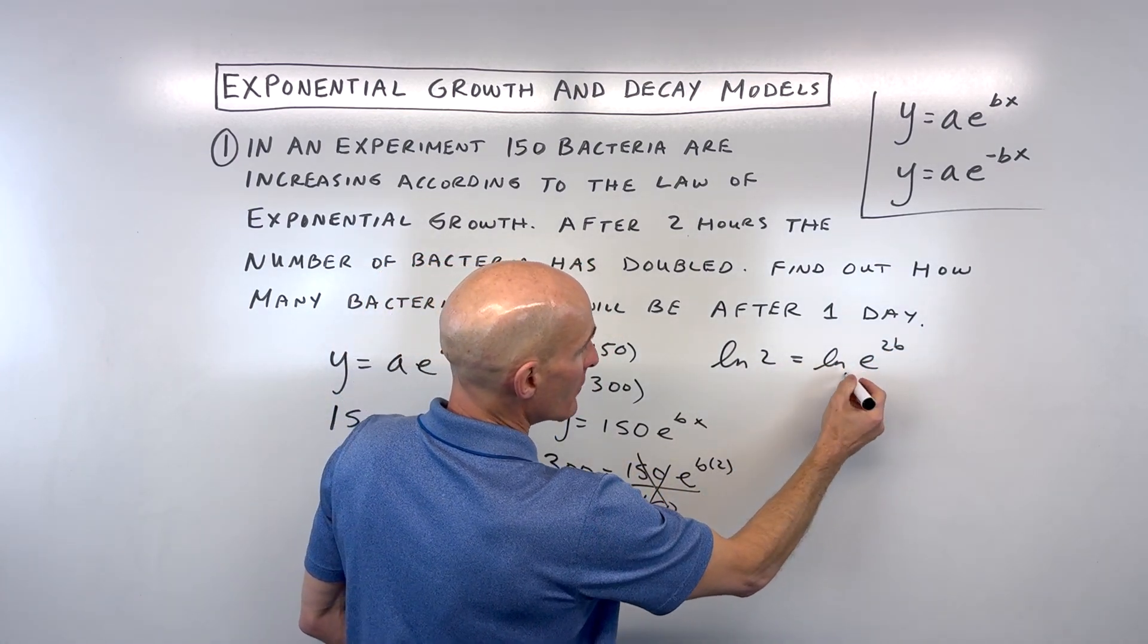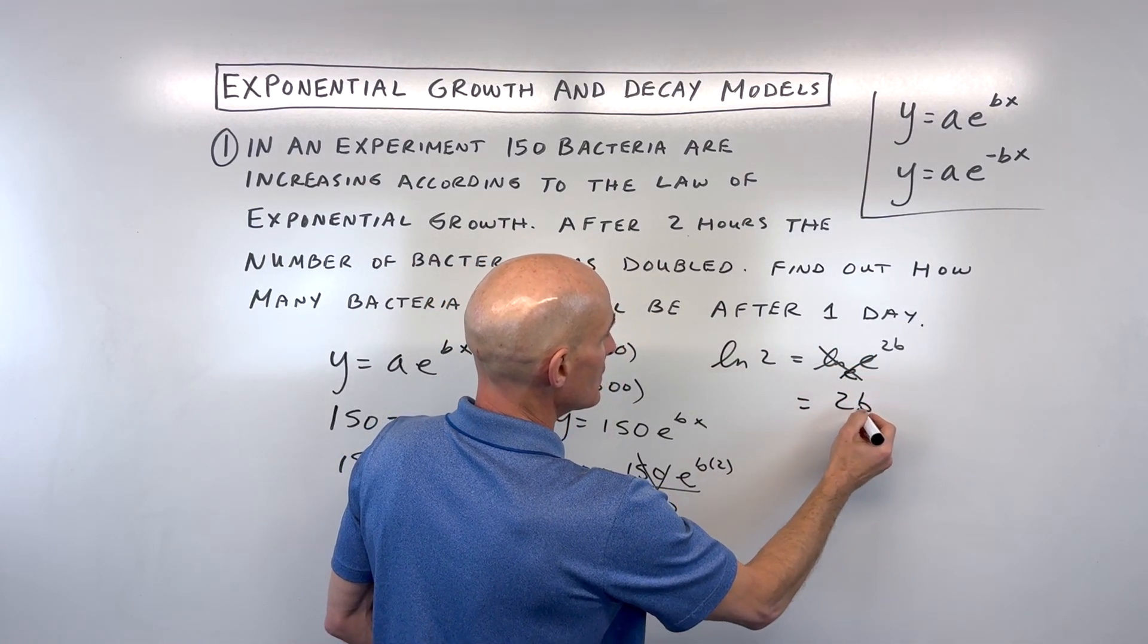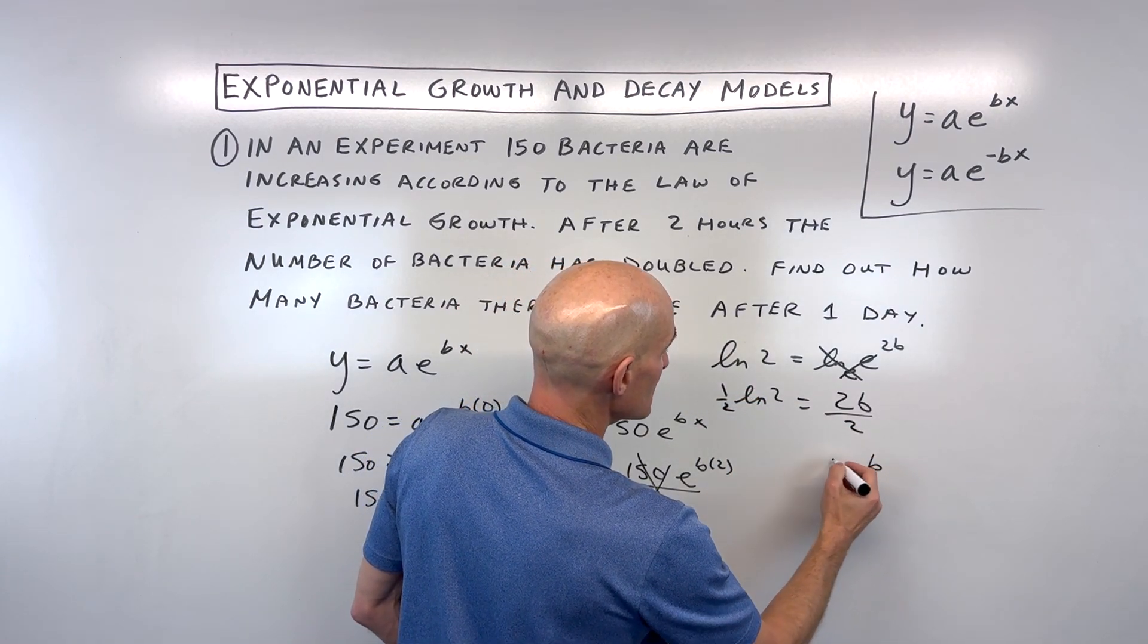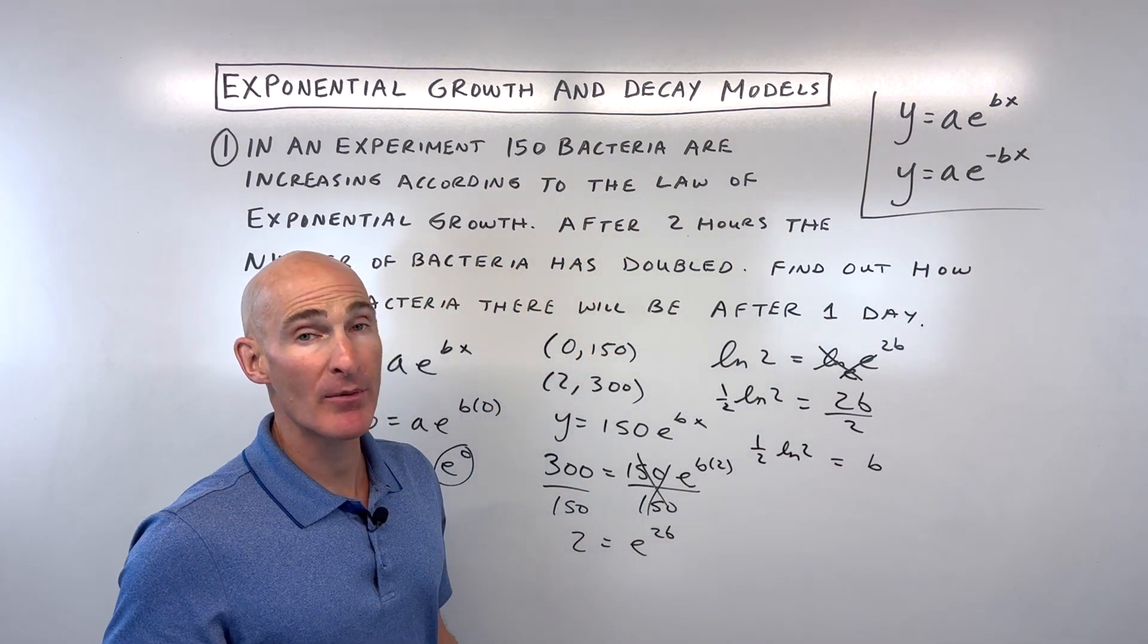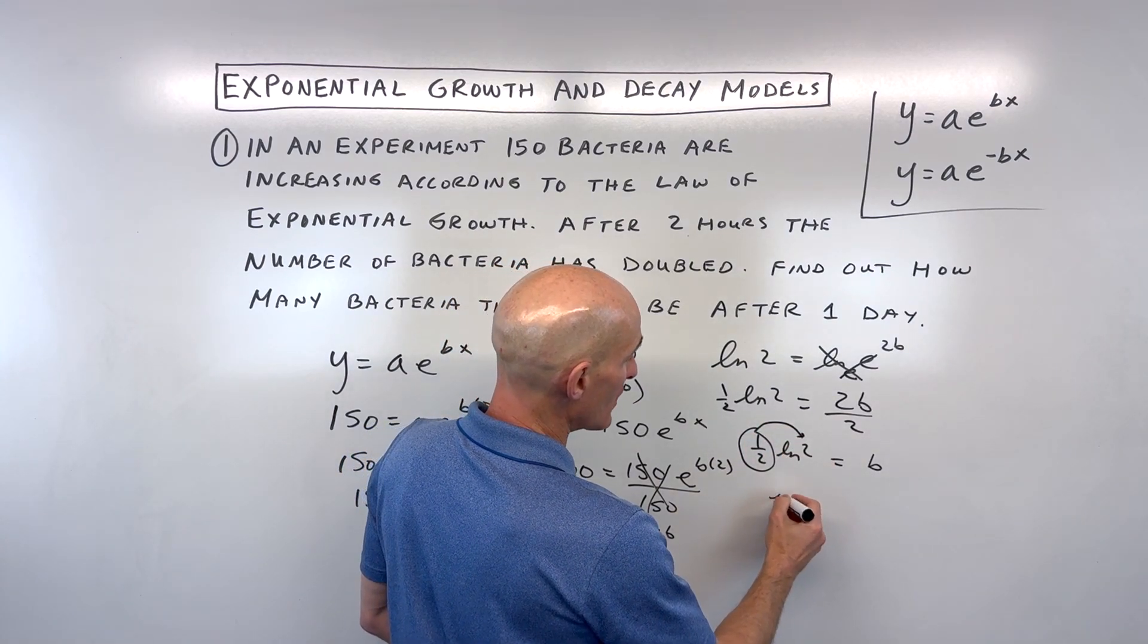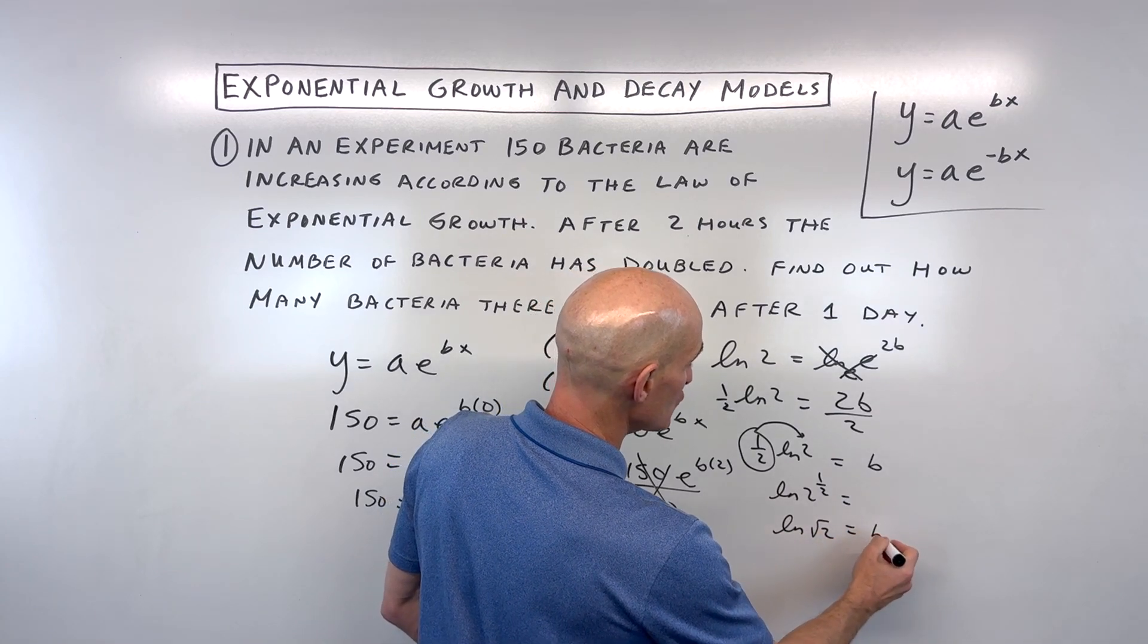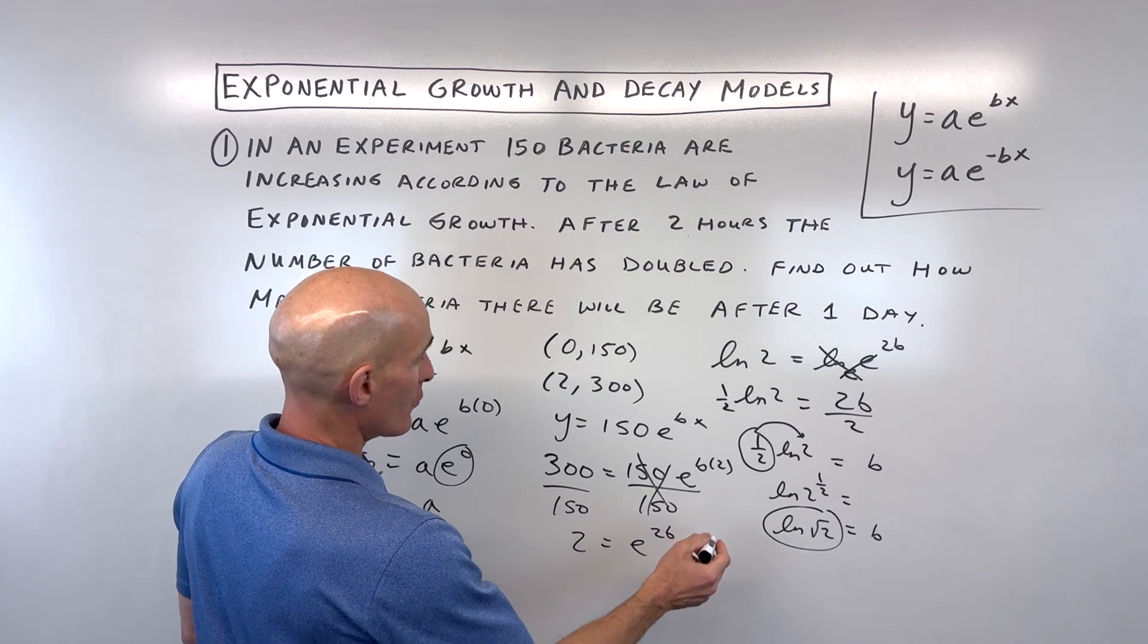Natural log is log base e, so these are inverses. We're left with 2b equals natural log of 2. Divide both sides by 2, so b equals one half natural log of 2. Using the power property of logarithms, we can bring the one half up as an exponent: natural log of 2 to the one half, which is natural log of square root of 2.